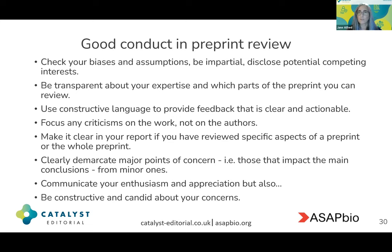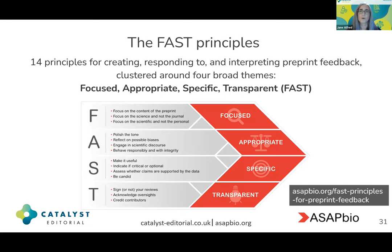In order to be actionable, feedback needs to be specific so authors know exactly what parts of a manuscript you're referring to and what the specific nature of your concern is. Focus any criticisms on the work and not on the authors, and make it clear if you've reviewed specific aspects of a preprint or the entire preprint. If you're writing a full text narrative review report, clearly demarcate your major points of concern — those that impact the main conclusions — from your more minor points, such as typos that need to be fixed. Do also communicate your enthusiasm and appreciation to the authors, but be constructive and candid about your concerns.